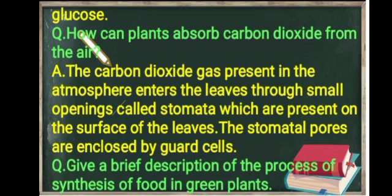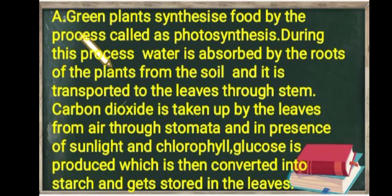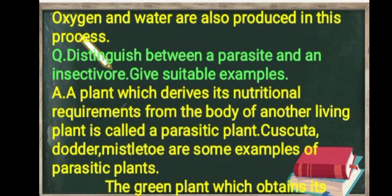The next question: give a brief description of the process of synthesis of food in green plants. Green plants synthesize food by the process called photosynthesis. During this process, water is absorbed by the roots from the soil and transported to the leaves through the stem. Carbon dioxide is taken up by the leaves from air through stomata, and in the presence of sunlight and chlorophyll, glucose is produced, which is then converted into starch and stored in the leaves. Oxygen and water are also produced in this process.